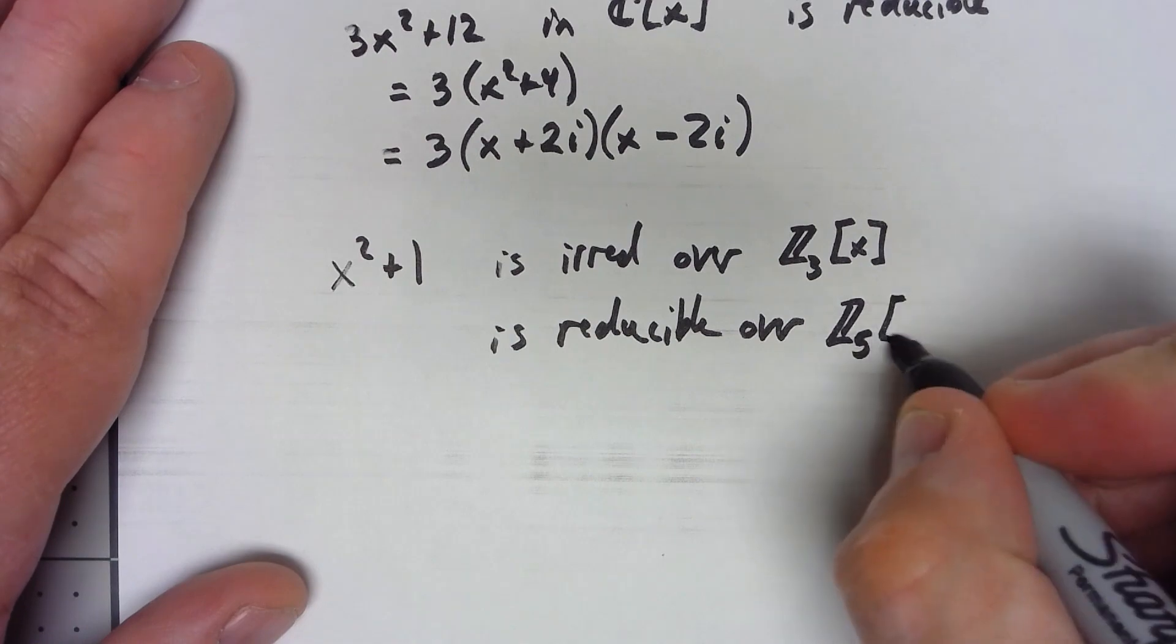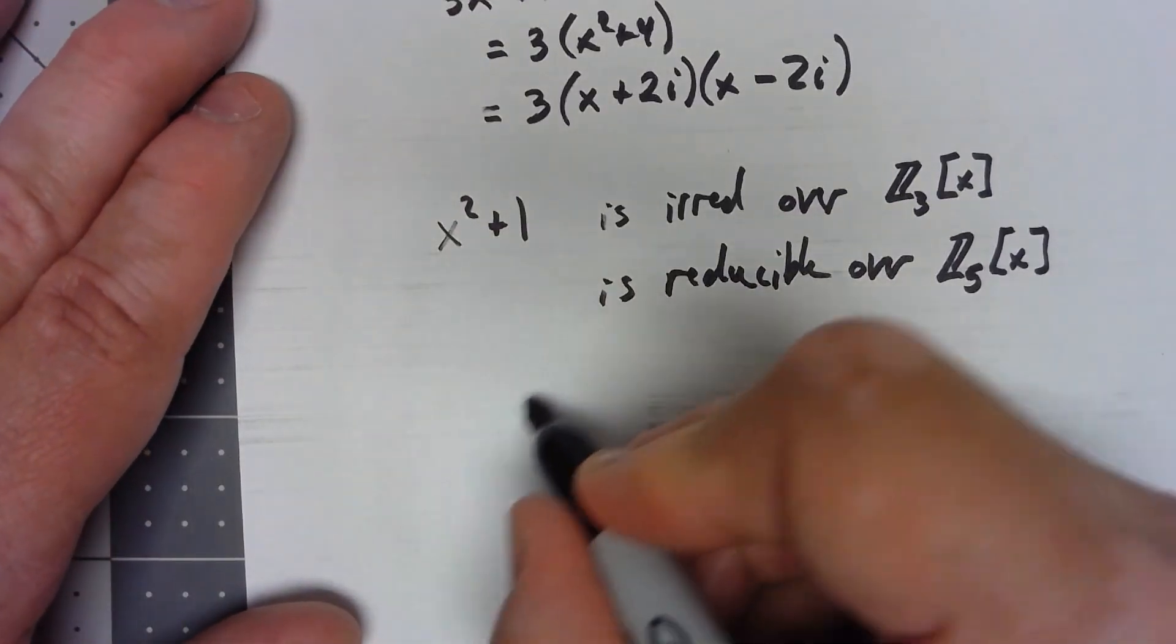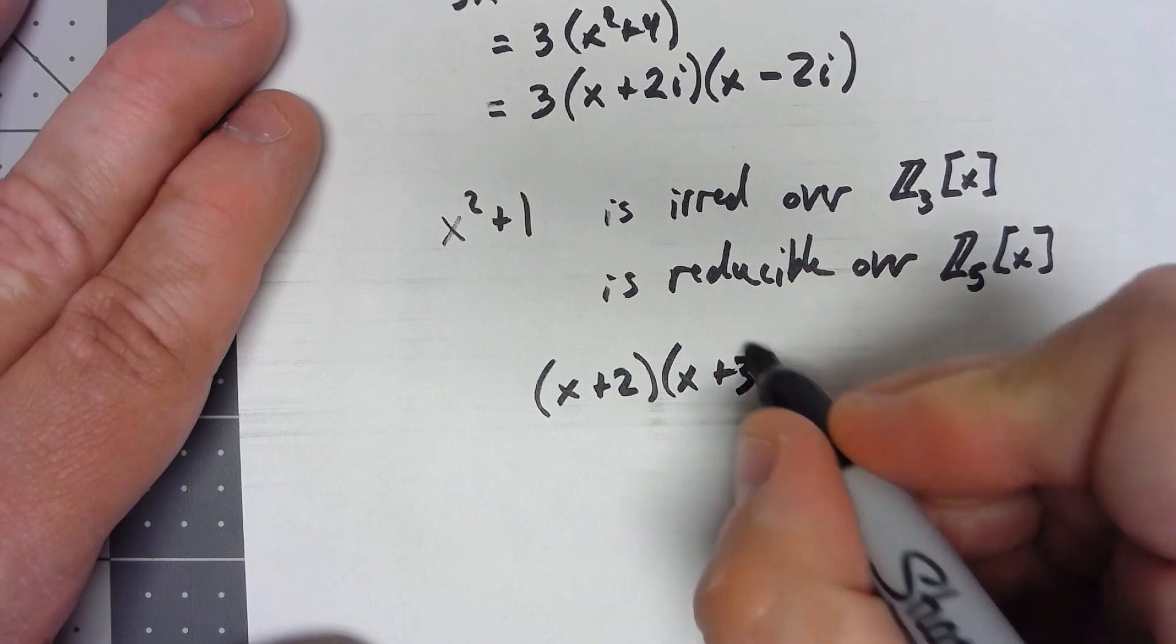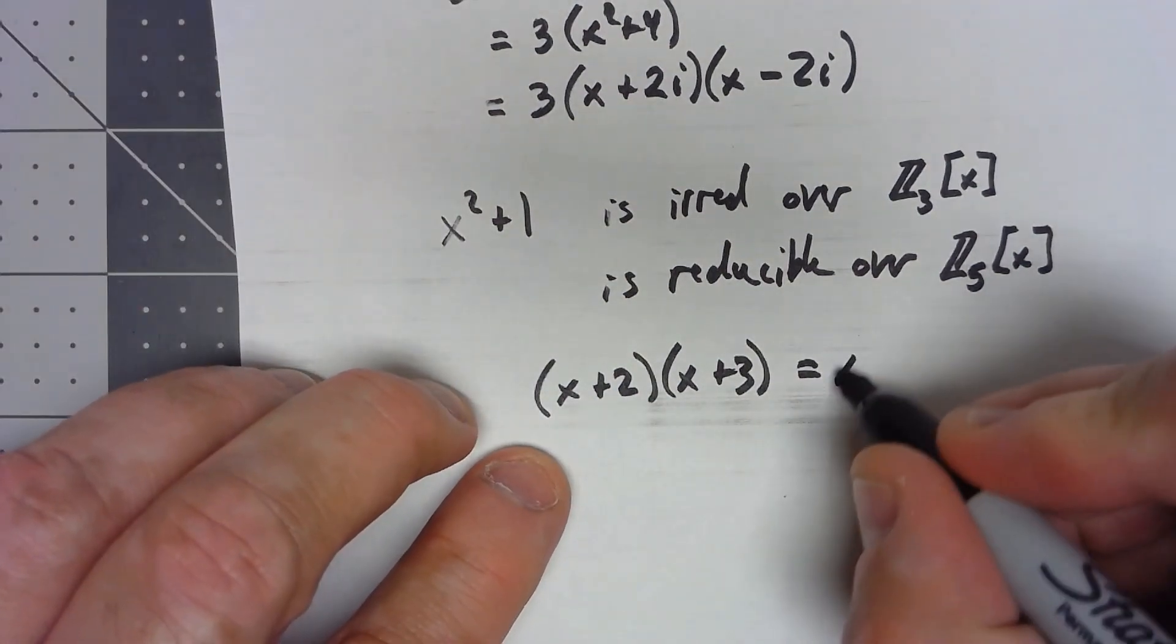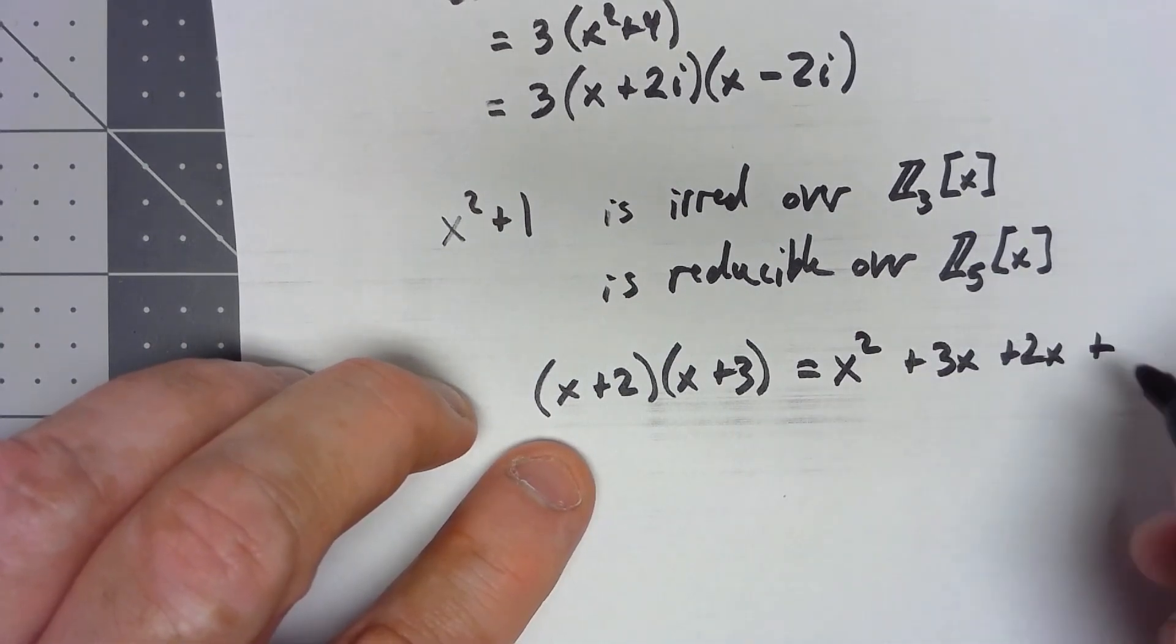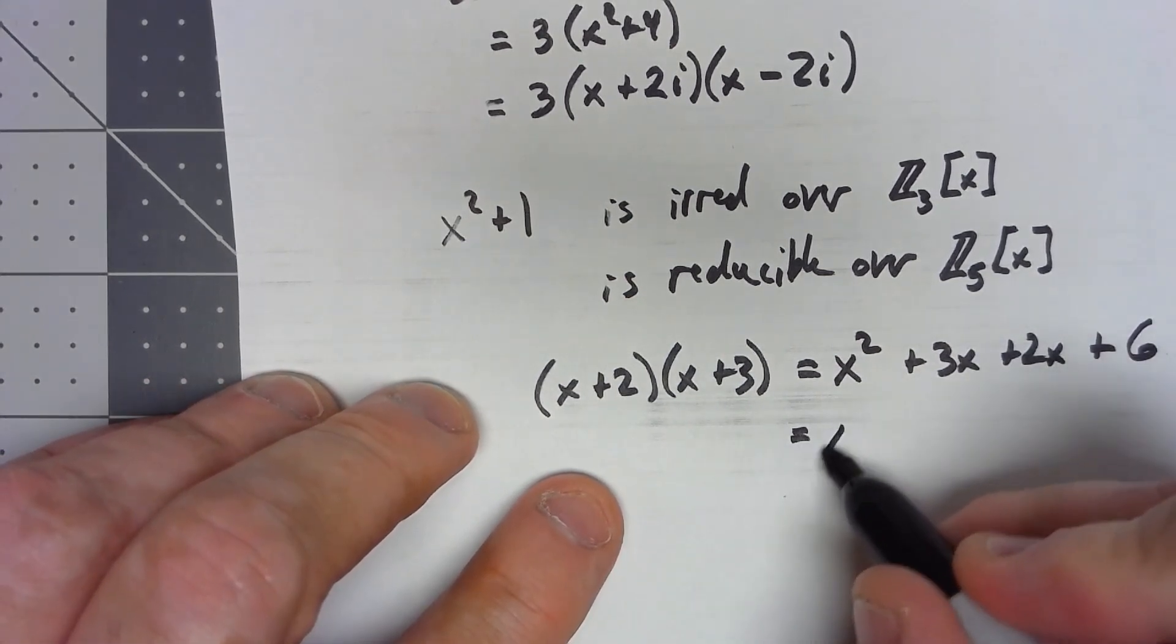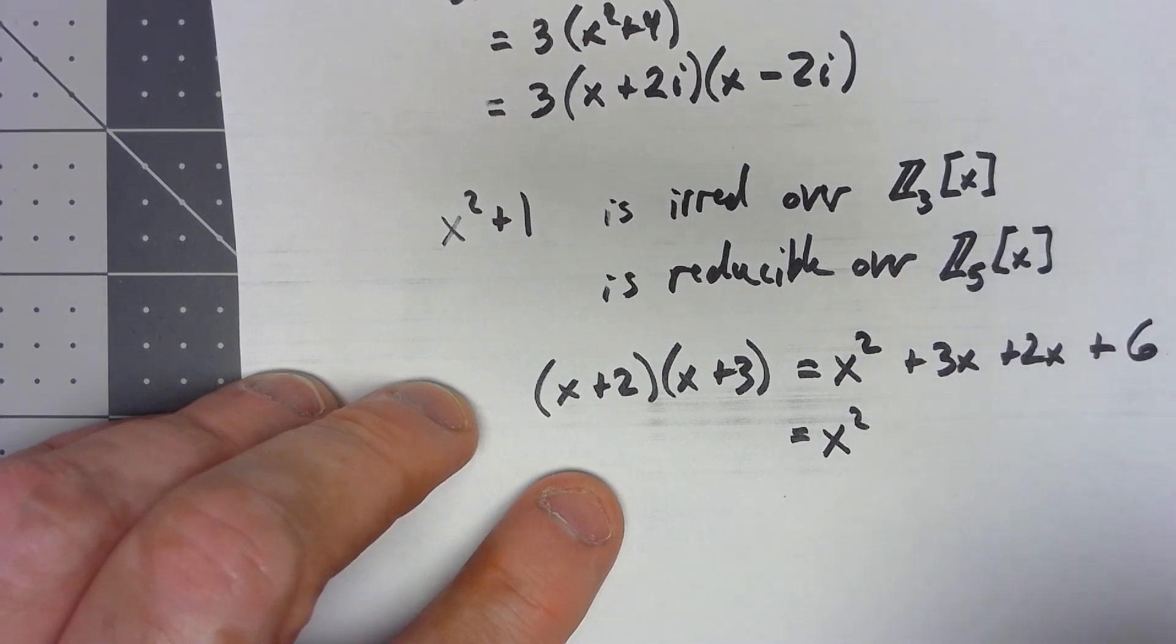Why is that? Because that actually factors as x plus 2 times x plus 3. Why is that? Because if I FOIL this thing out I've got x squared plus 3x plus 2x plus 6 but all these things are mod 5. So when I do 3x plus 2x, 5x becomes 0 and 6 becomes plus 1.